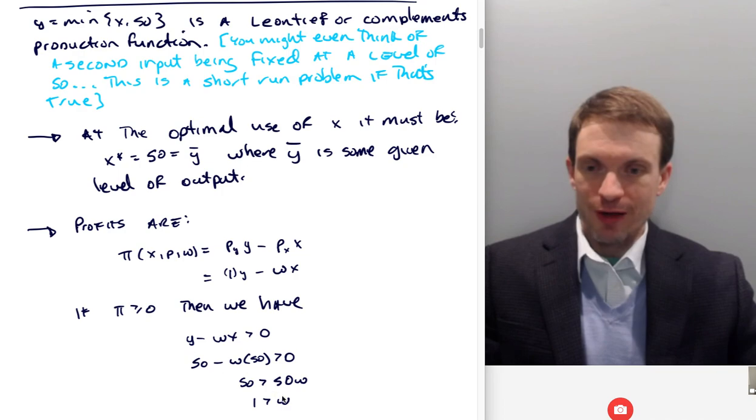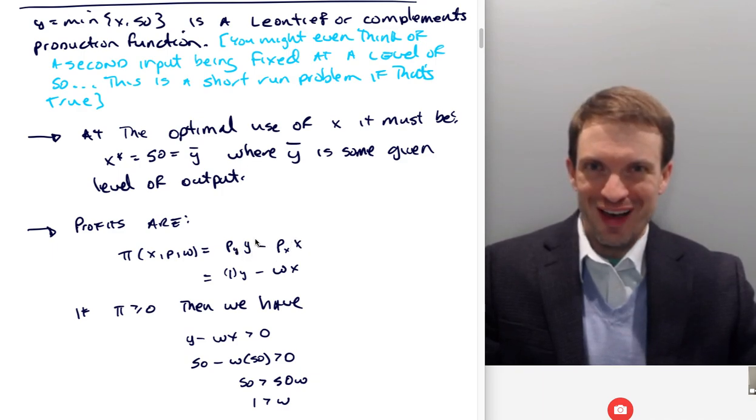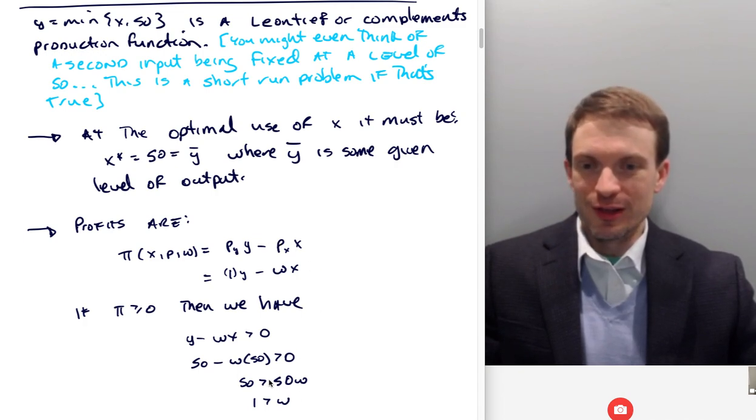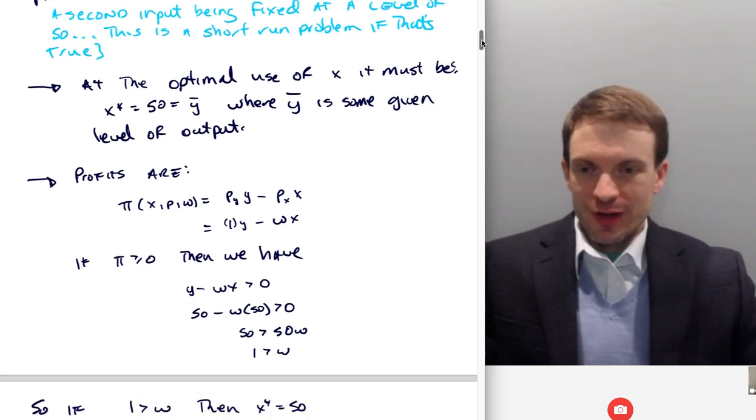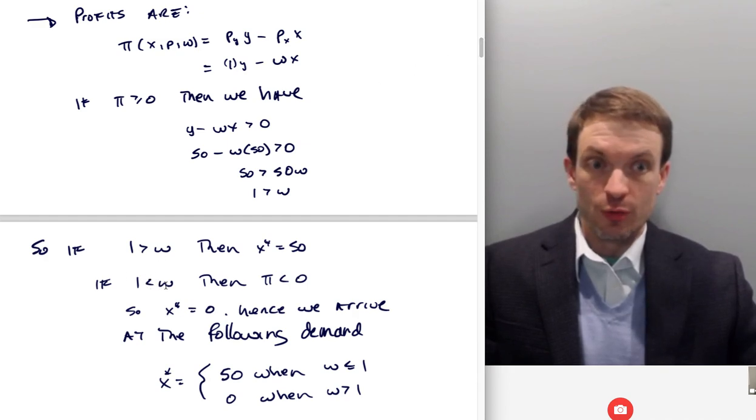Well, why is that the case? You can look back up at our production function, actually just look at our profit function and see, well, if we're using 50 units of X and we're using 50 units of Y, when are we profitable? If the output price is a dollar, well, when the input price is less than a dollar, right? So that should be pretty straightforward. Take a look at that, but we're not done because we could have something else. We want to pin down the demands fully. We could have a situation where the input price is bigger than one. What do you do then?